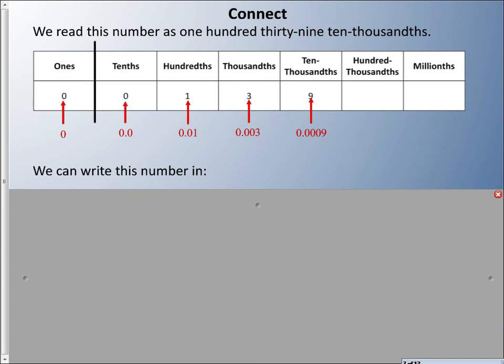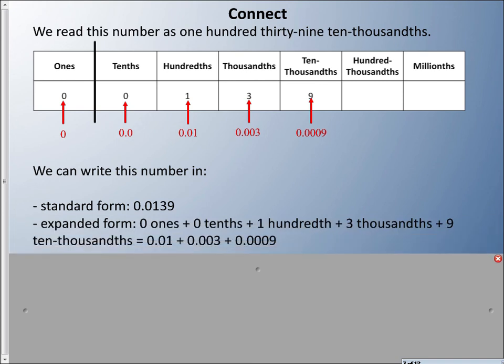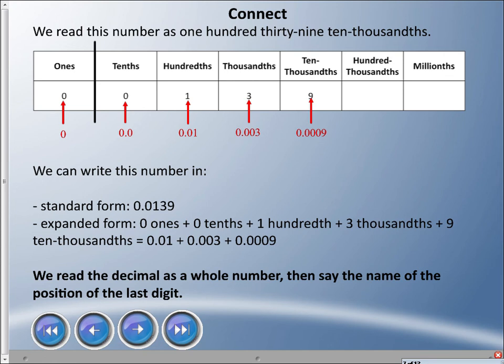We read this number as one hundred thirty-nine ten-thousandths. In standard form it looks like 0.0139. In expanded form: zero ones plus zero tenths plus one hundredth plus three thousandths plus nine ten-thousandths. We could write that using decimals as 0.01 plus 0.0003 plus 0.0009.